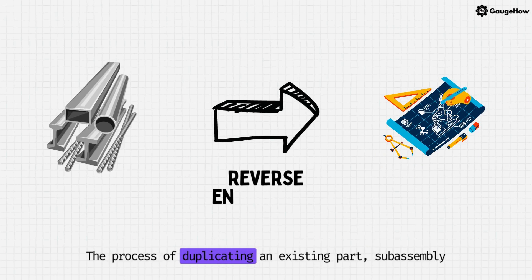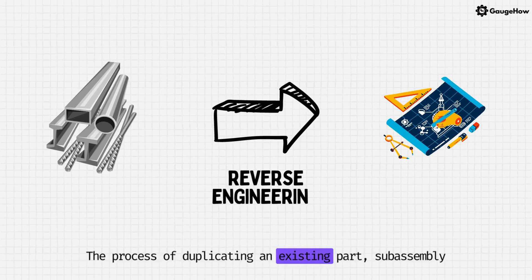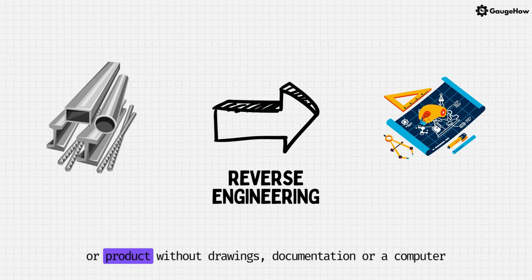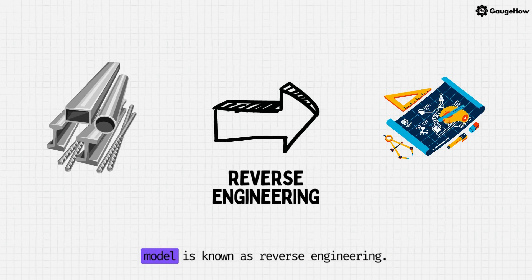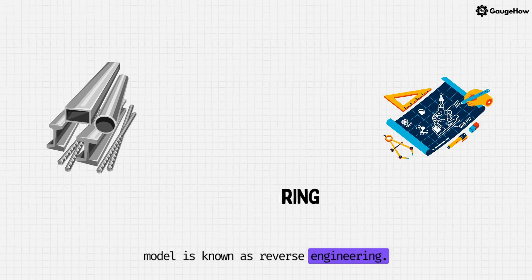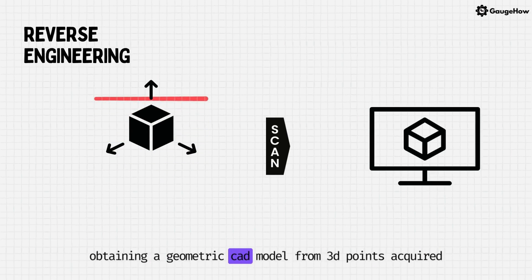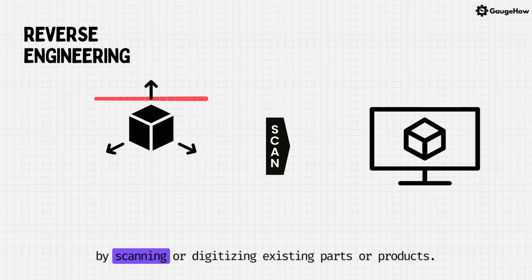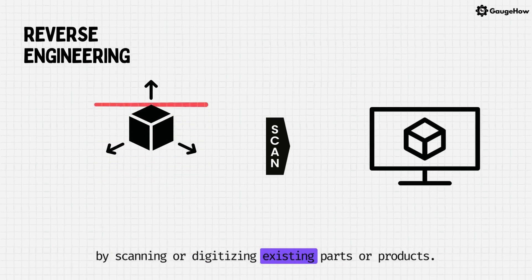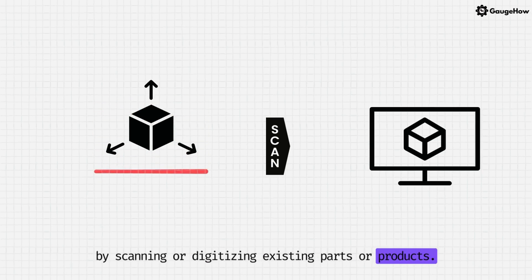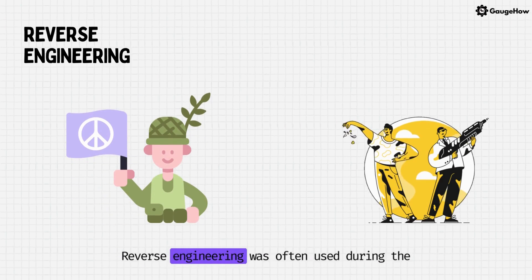The process of duplicating an existing part, sub-assembly or product without drawings, documentation or a computer model is known as reverse engineering. Reverse engineering is also defined as the process of obtaining a geometric CAD model from 3D points acquired by scanning or digitizing existing parts or products.